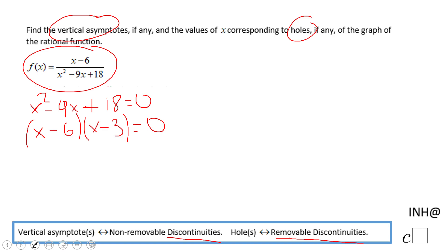And we have x minus 6 equals zero, x minus 3 equals zero, which gives us the two values: x equals 6 and x equals 3.